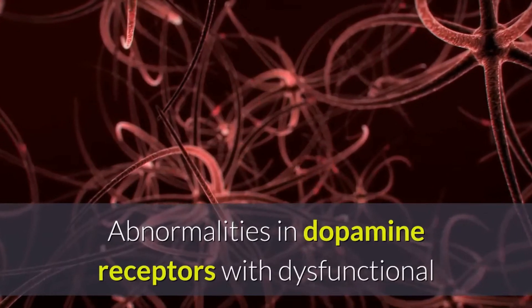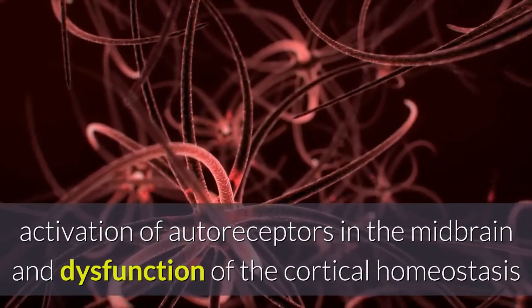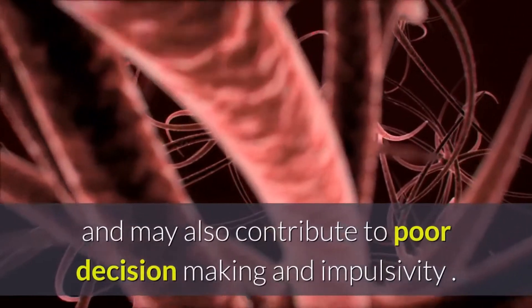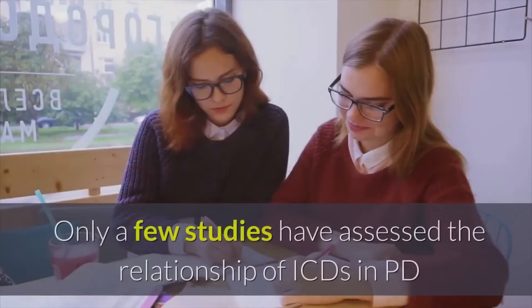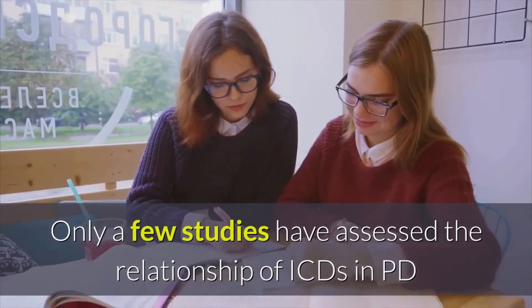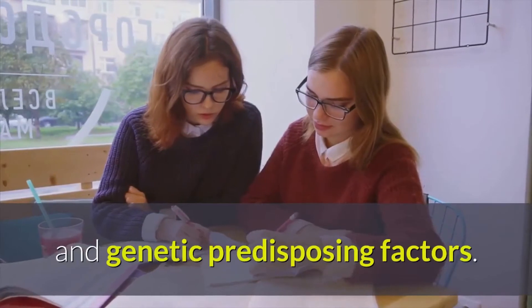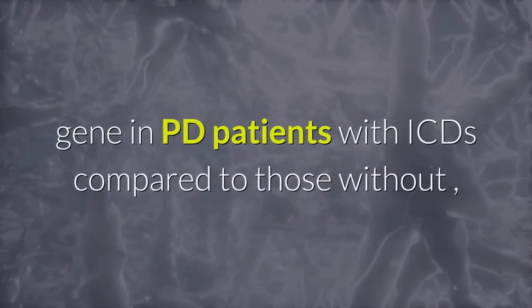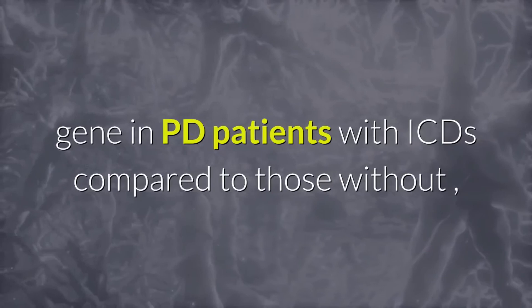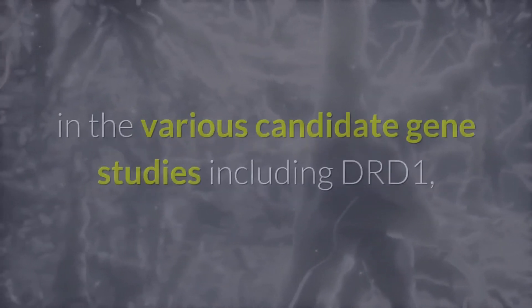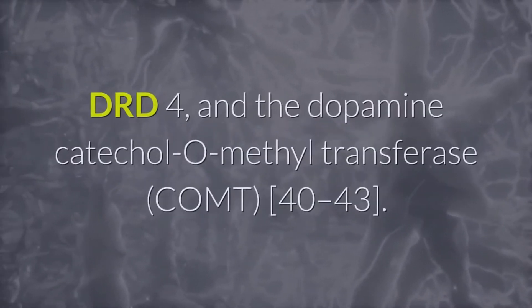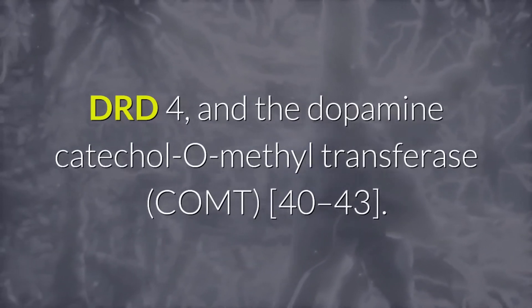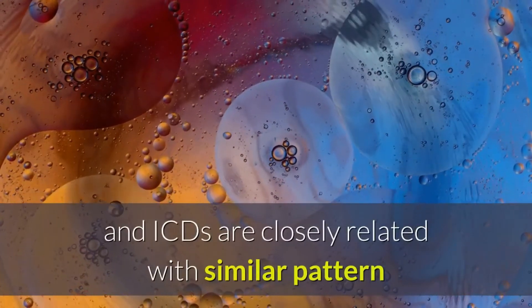Abnormalities in dopamine receptors, with dysfunctional activation of autoreceptors in the midbrain and dysfunction of cortical homeostasis, have been shown in PD patients with ICDs and may contribute to poor decision-making and impulsivity. Genetically, one study found a higher rate of polymorphism in the dopamine receptor 3 (DRD3) gene in PD patients with ICDs, while other studies found no differences in candidate genes including DRD1, DRD4, and catechol-O-methyltransferase (COMT).